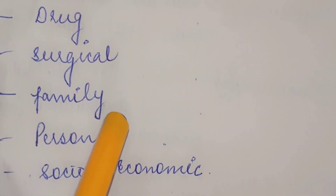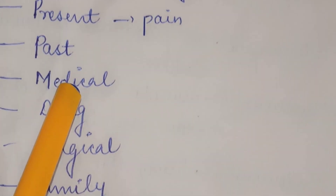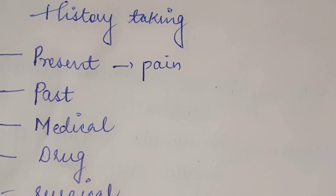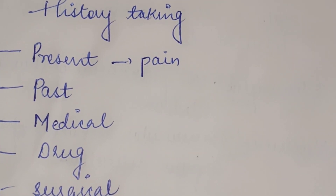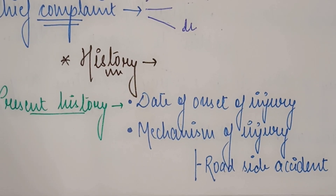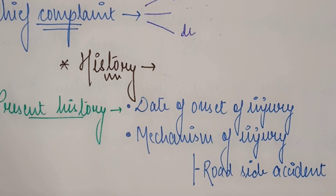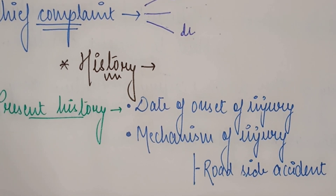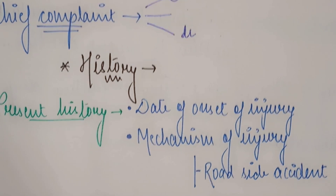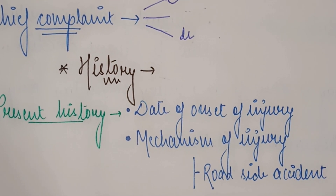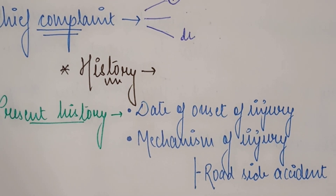Now we'll talk about the detail of each and every history taking. Let's begin with the present history. The present history, which is included in history taking, should be written in paragraph form till date.